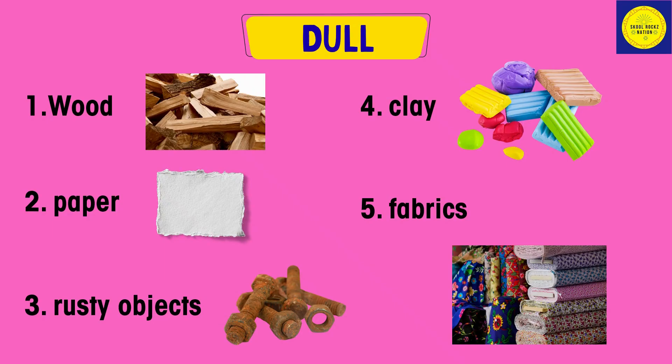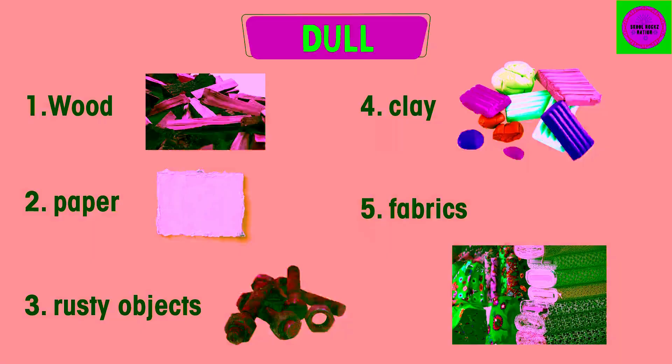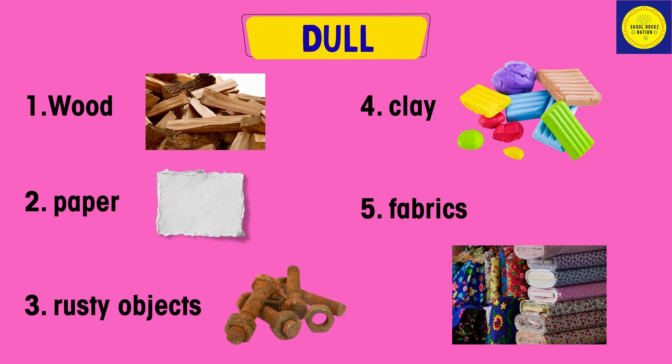Examples of dull objects: wood, paper, rusty objects, clay, fabrics.